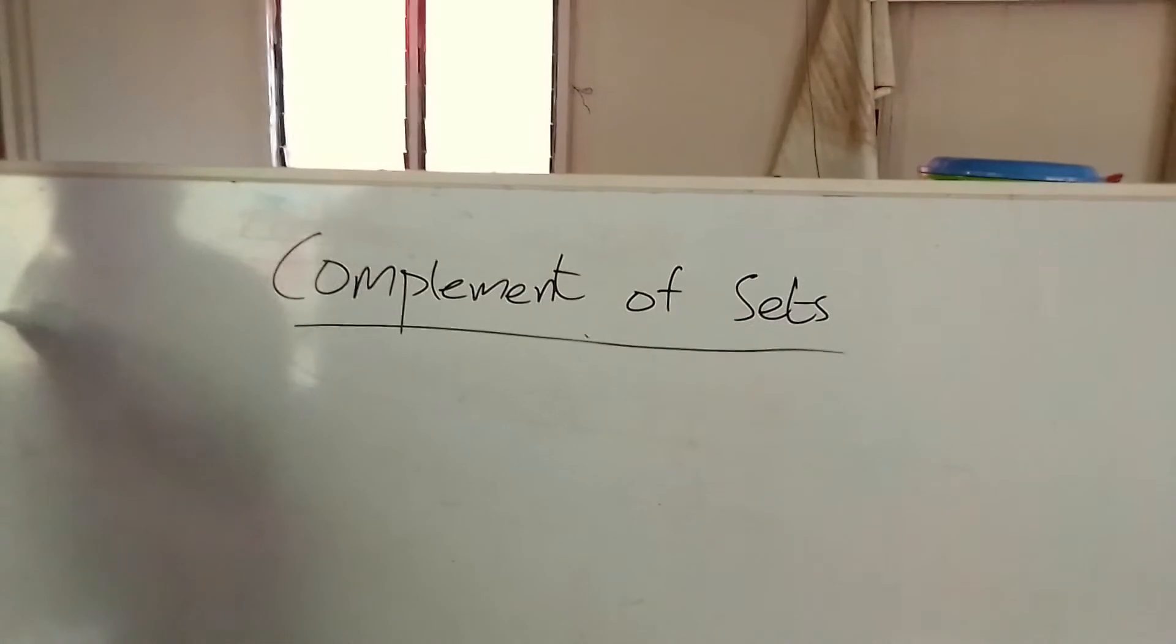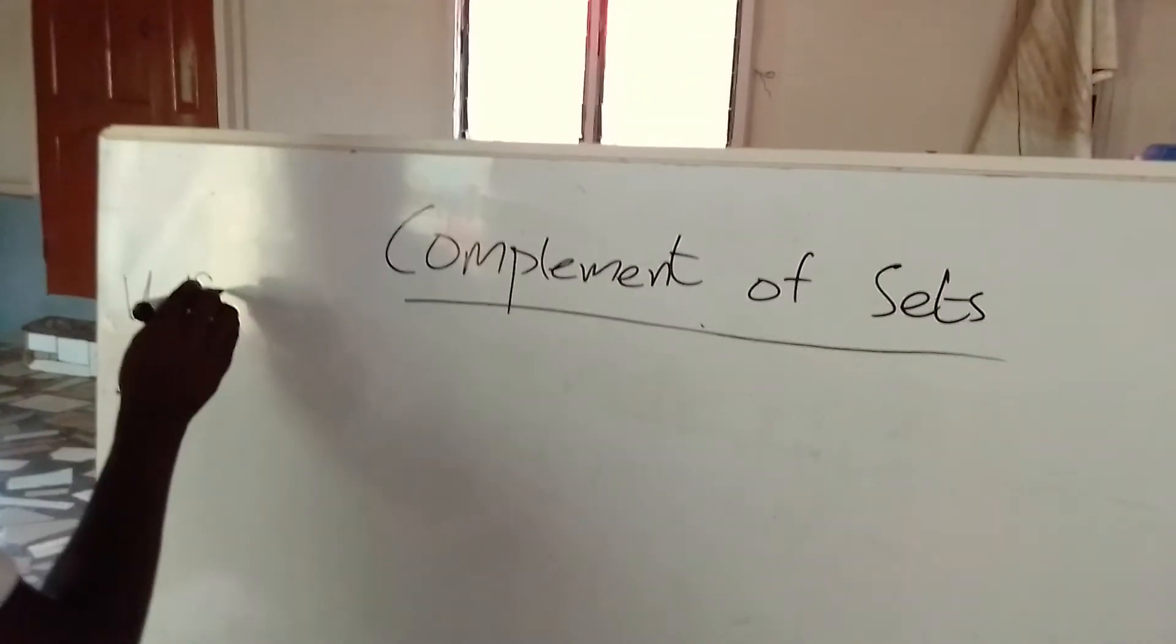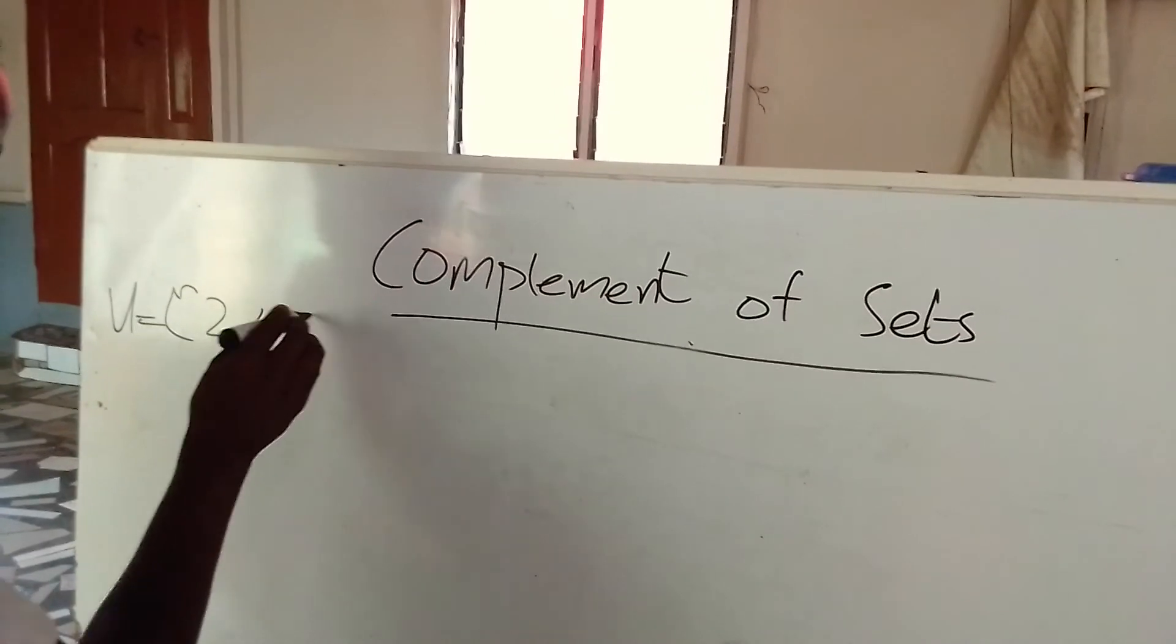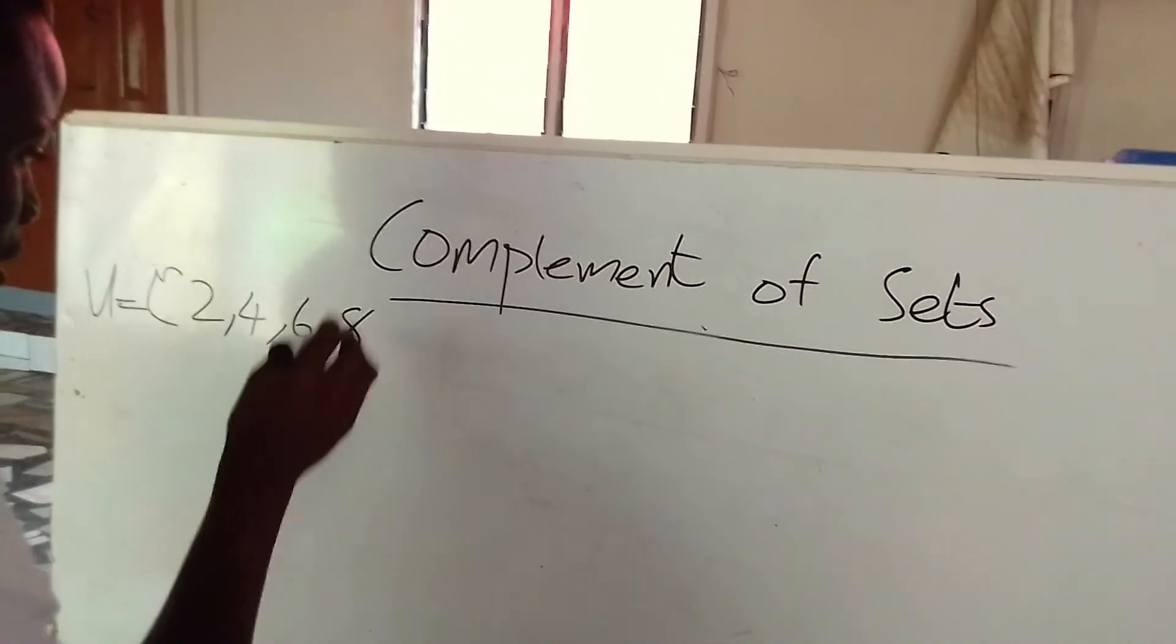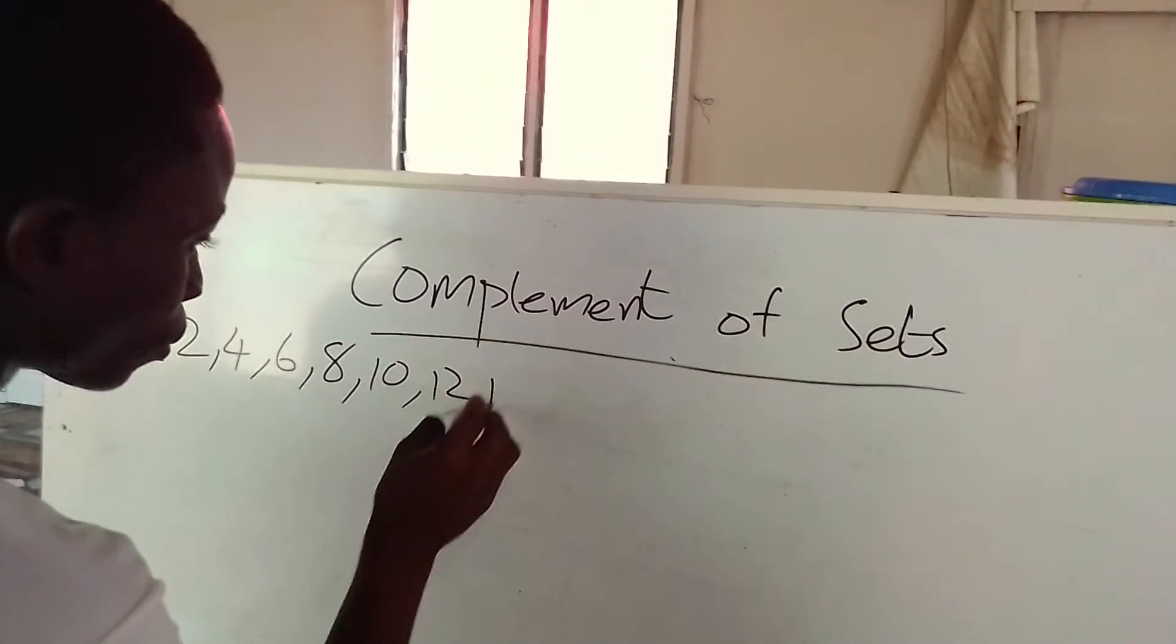So, I'm writing my universal set down. And it's from 2, 4, 6, 8, 10, 12, 14.